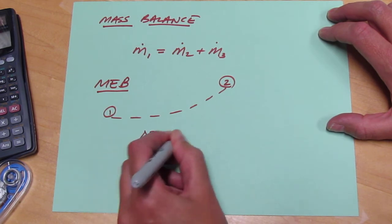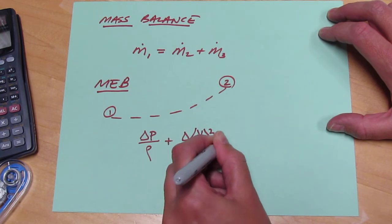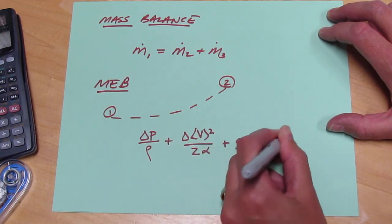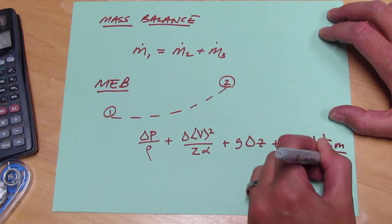So delta P over rho plus delta V squared over 2 alpha plus G delta Z plus the friction is equal to the work shaft on over the mass flow rate.